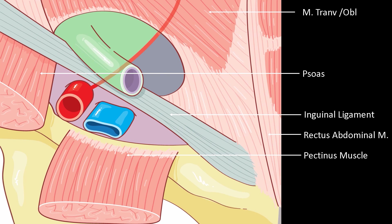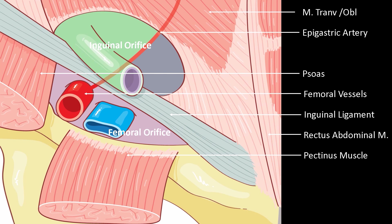It is subdivided into three orifices. The inguinal ligament, stretched between the anterior superior iliac spine and the pubic symphysis, separates below the crural orifice, which allows the femoral vessels to pass, and at the top, the inguinal orifice.